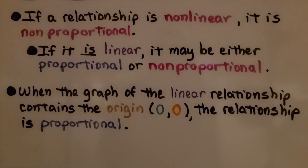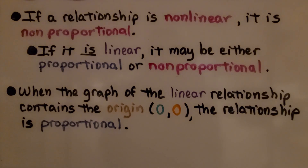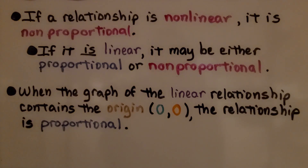If a relationship is non-linear, it is non-proportional. If it is linear, it may be either proportional or non-proportional. When the graph of the linear relationship contains the origin, the relationship is proportional.